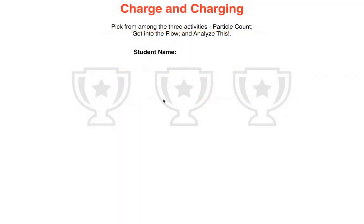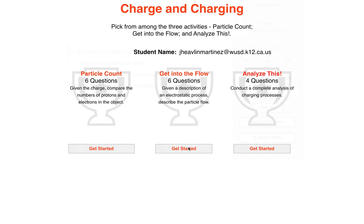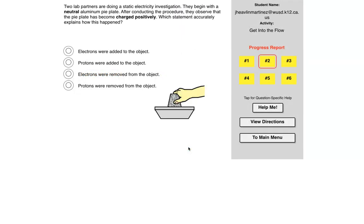Let's look at the get into the flow question. Two lab partners are doing a static electricity investigation. They begin with a neutral aluminum pie plate. After conducting the procedure, they observe that the pie plate has become charged positively. Which statement accurately explains how this happened? Here's the thing: electrons are the particles that flow. Protons are not the particles that flow.